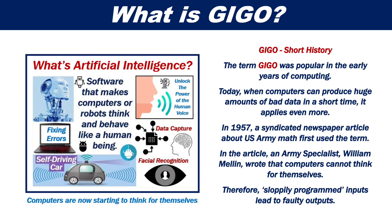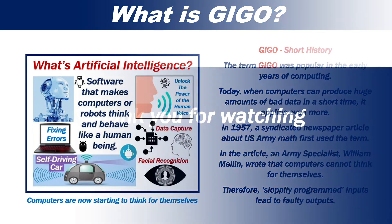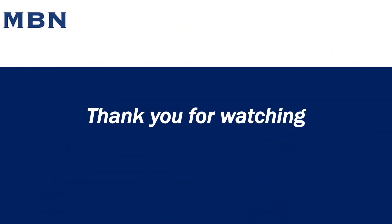The term GIGO was popular in the early years of computing. Today, when computers can produce huge amounts of bad data in a short time, it applies even more. In 1957, a syndicated newspaper article about US Army math first used the term. In the article, an Army specialist, William Mellon, wrote that computers cannot think for themselves. Therefore, sloppy programmed inputs lead to faulty outputs. Thank you for watching this brief video on GIGO.